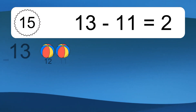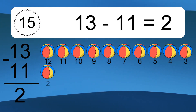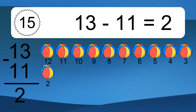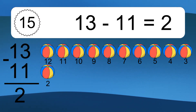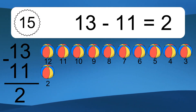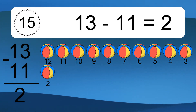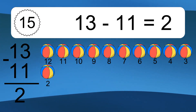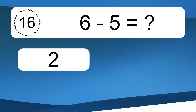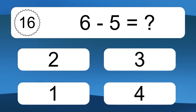13 minus 11 equals what? 13 minus 11 equals 2. Let's count it. 12, 11, 10, 9, 8, 7, 6, 5, 4, 3, 2.